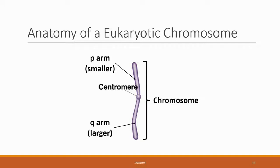Let's broadly examine the parts of a chromosome in eukaryotes. In the middle is what's called a centromere, where the chromosome can be tethered to or moved around the cell. To either side — the top or the bottom — is called the P-arm and the Q-arm. One arm is shorter than the other: the P-arm is the smaller, and the Q-arm is the larger one.